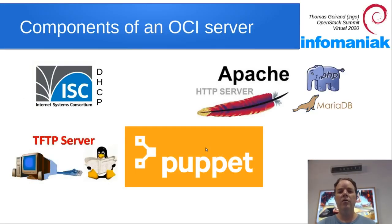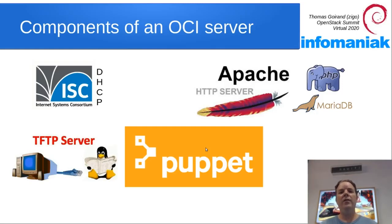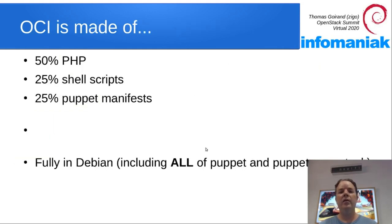OCI uses these technologies: a DHCP server, Apache, PHP, MySQL, a TFTP server, and Puppet. OCI is made of 50% PHP, 25% shell script, and 25% Puppet manifests.